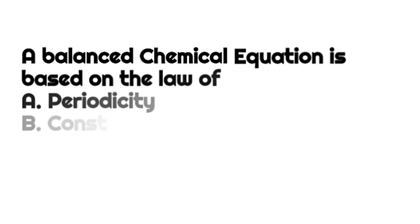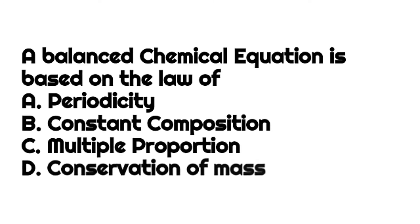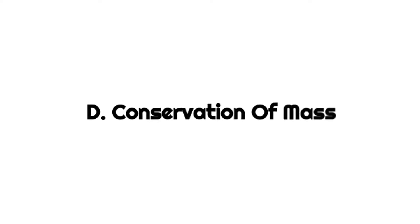A balanced chemical equation is based on the law of — a) periodicity, b) constant composition, c) multiple proportion, and d) conservation of mass. The answer is d) conservation of mass, which states that in a closed or isolated system, the mass of the products and the mass of the reactants must be equal.